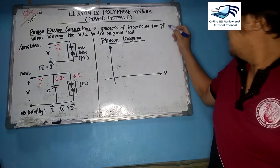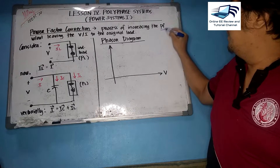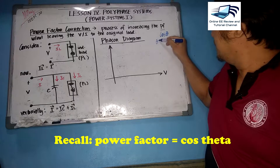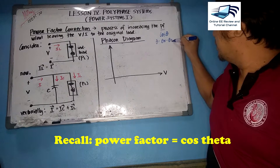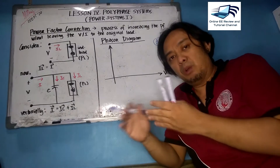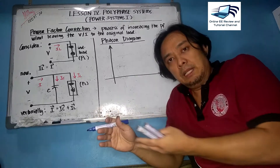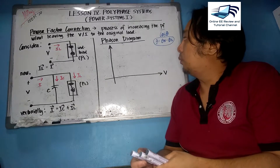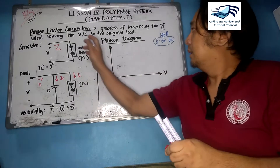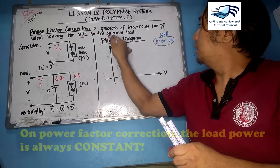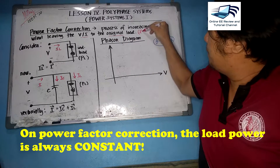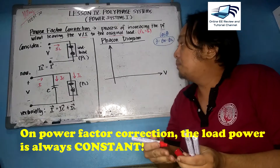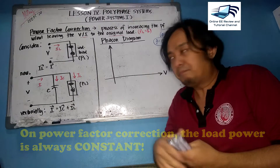We need to go back to our previous lessons so you can know what power factor is all about. Power factor is the cosine of angle theta, where theta is the difference between the voltage and current angles. One important phrase here: without leaving the voltage and current to the original load — meaning the real power of the load must remain constant throughout.